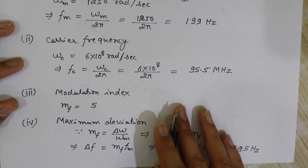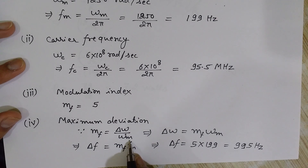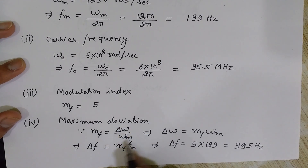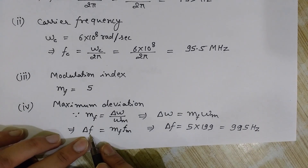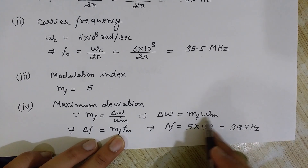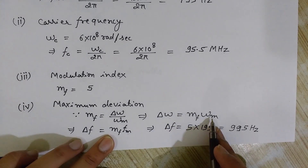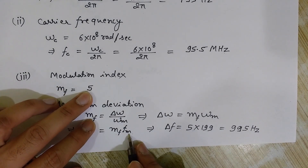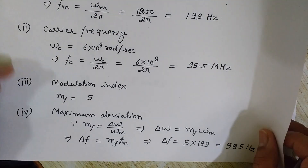Now, the maximum deviation. The modulation index formula is mf = Δω / ωm, or equivalently Δf = mf × fm. So the maximum frequency deviation Δf = mf × fm = 5 × 199 Hz = 995 Hz. This is the maximum deviation.